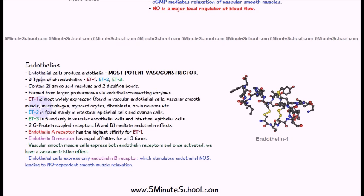The last topic is endothelins — the most potent vasoconstrictors. There are three types: ET1, ET2, and ET3. They contain 21 amino acid residues and two disulfide bonds, and are formed from larger pro-hormones via endothelin-converting enzymes. ET1 is the most widely expressed, found in vascular endothelial cells, vascular smooth muscle, macrophages, myocardiocytes, fibroblasts, brain neurons, and others. ET2 is found mostly in intestinal epithelial and ovarian cells, and ET3 in vascular endothelial and intestinal epithelial cells.